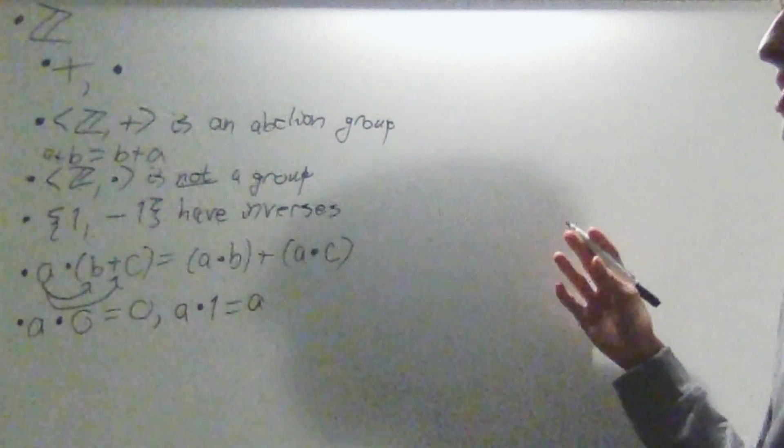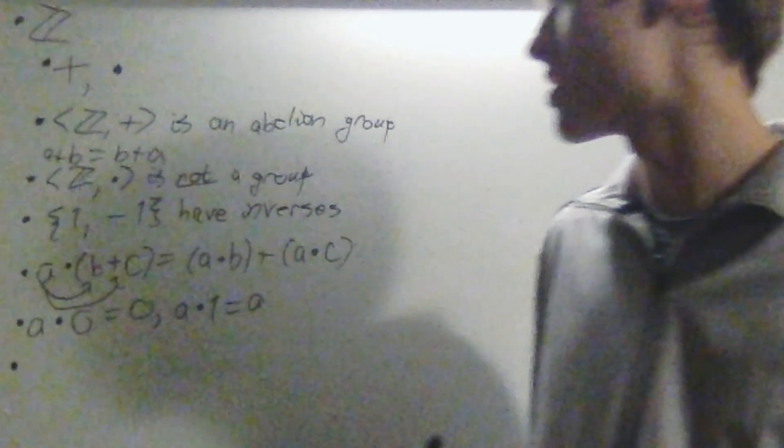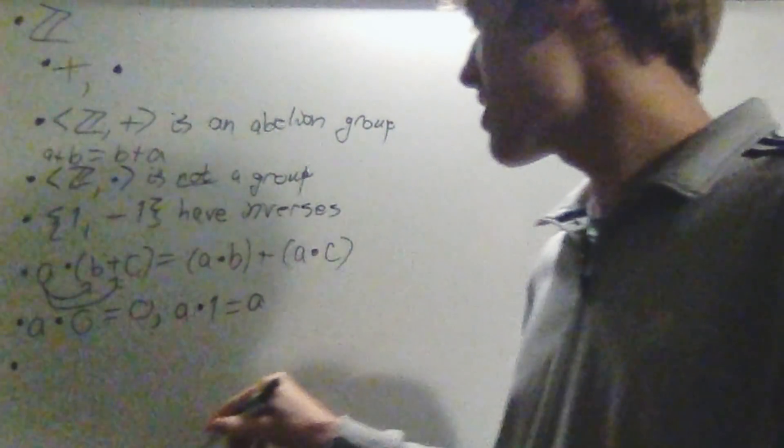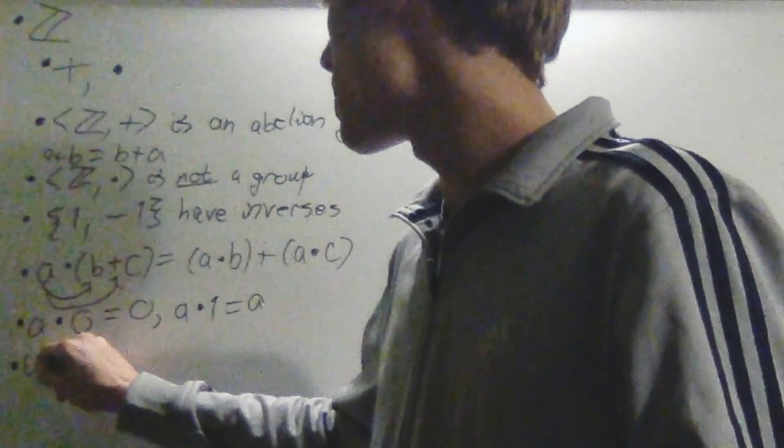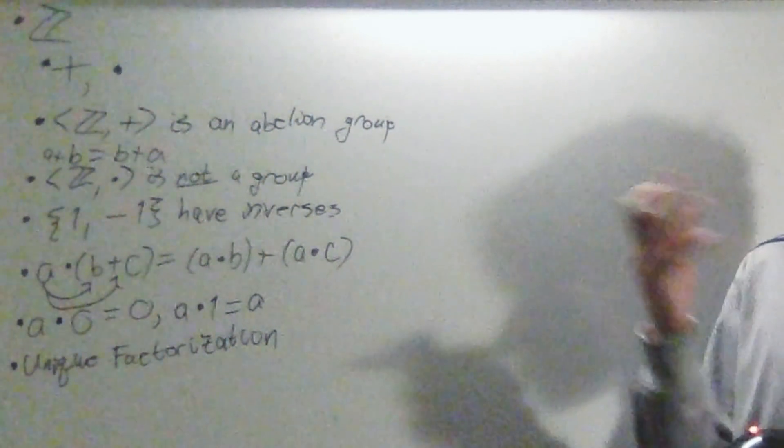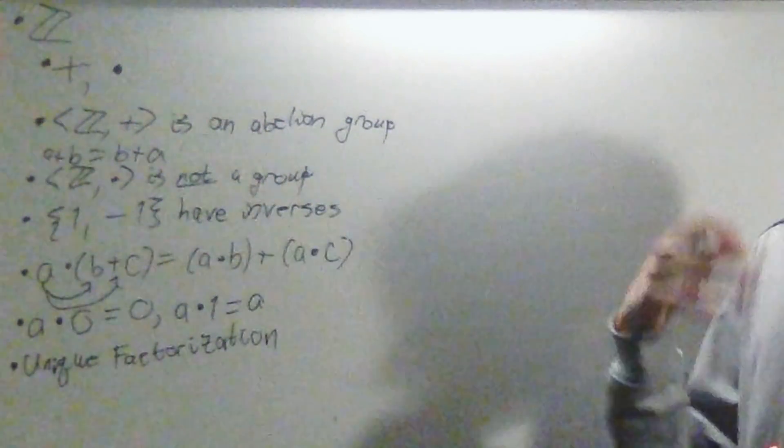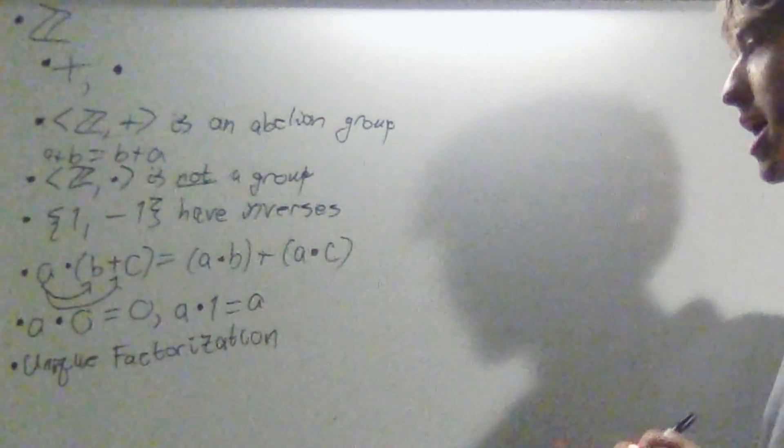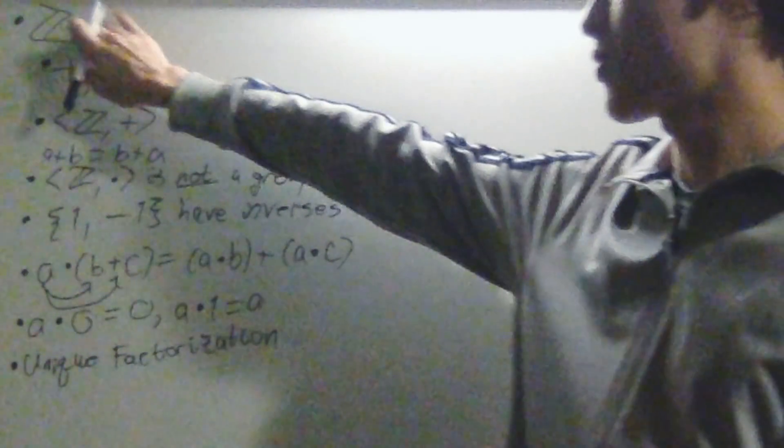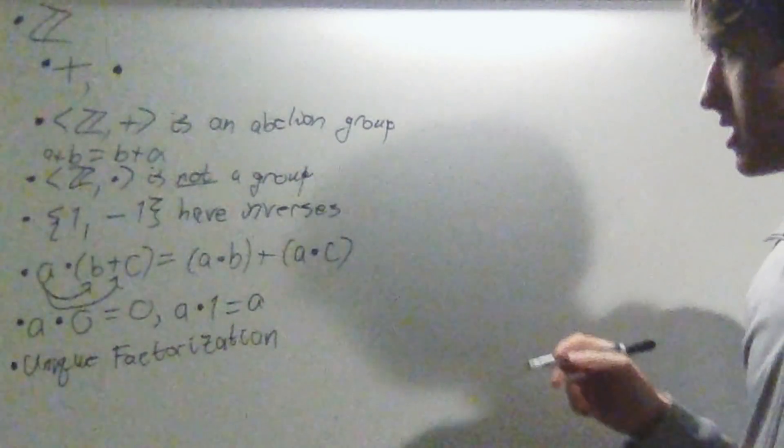Now, I'm just going to list out another property of the integers, although this is not necessarily related to rings, although you'll see in the future that it kind of is. They have unique factorization. Every single number can be written as a product of primes, and they can be written as a unique product of primes, and that's unique factorization.